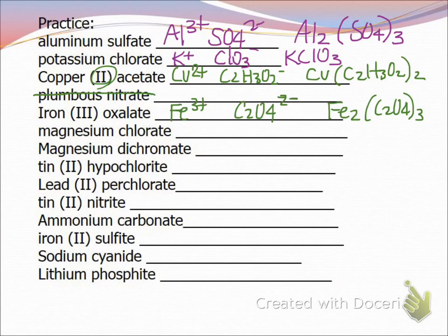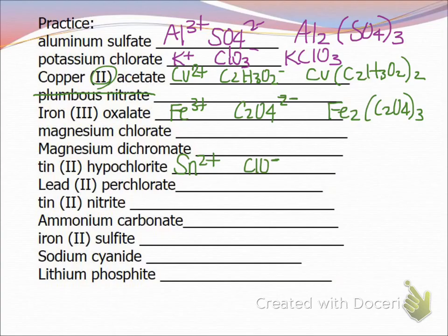Let's do one more before having you fill in the rest. Tin(II) hypochlorite: tin(II) is +2 and hypochlorite is ClO⁻. I'm going to need two hypochlorites to go with one tin(II): Sn(ClO)₂. Now pause the video and try to complete the rest of those.